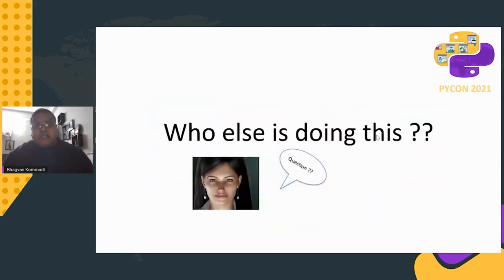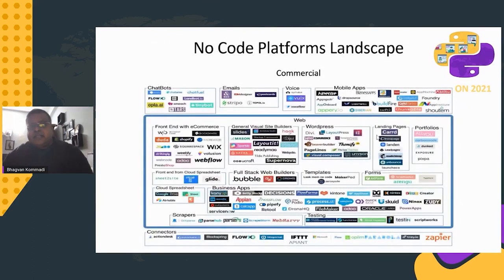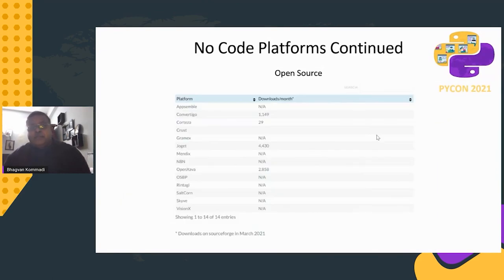Who else is doing this? Many companies focus on chatbots, emails, web, and universal connectors. Commercial examples include Automate.io, Zapier, IFTTT, Tray.io, Parabola, Flow, Blockspring, and ActionDesk. Open-source options include AppSymbol, Convertigo, Zoget, Mendix, Integi, Sartcon, and VisionX.